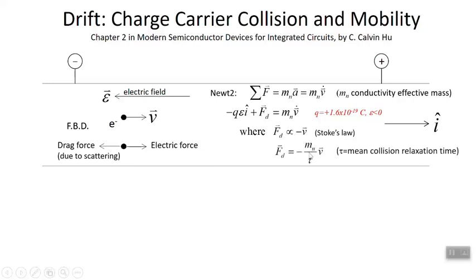There is a proportionality constant. We're going to use the mass of the charge carrier, the conductivity effective mass, divided by a mysterious parameter called tau, which I'm going to argue is the mean time between collisions. The purpose of that argument will become more clear when we solve for the terminal velocity. That's what the drag force is from Stokes' Law.